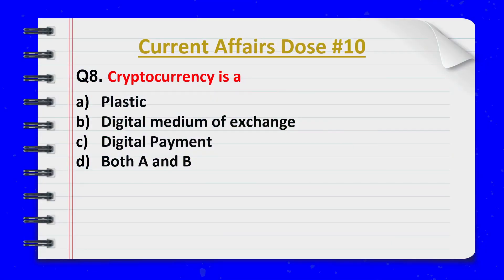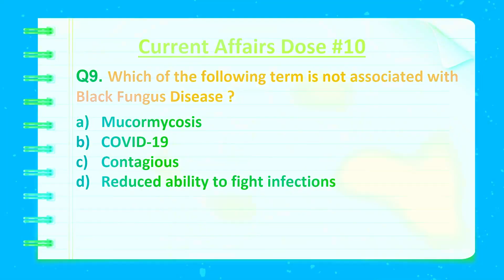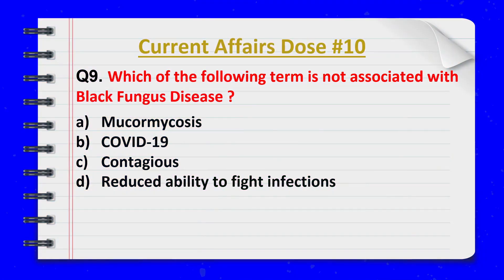Question 8. Cryptocurrency is a what? Correct answer: option B — Digital medium of exchange.